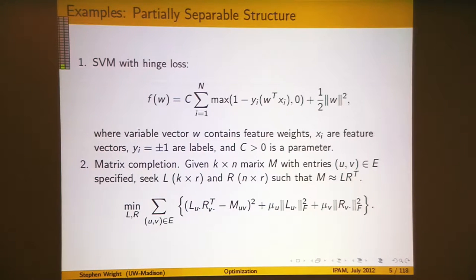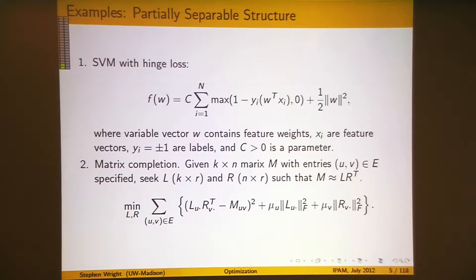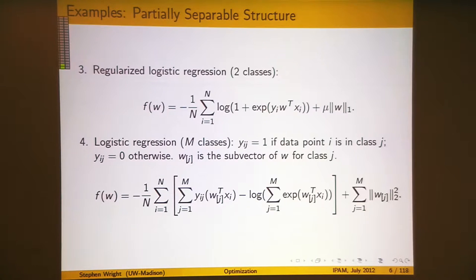Matrix completion crops up in recommender systems. Given a k-by-n matrix M where only some entries are known, you're trying to learn matrices L and R such that M is approximately L times R transpose. You sum over all known entries E, trying to make the product LR match M as closely as possible on each known entry, with regularization terms to impose low-rank structure on L and R.